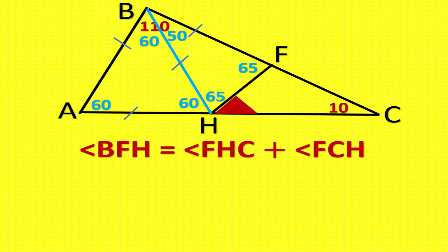Angle BFH equals angle FHC plus angle FCH. Angle FHC equals 65 minus 10. Angle FHC equals 55 degrees.